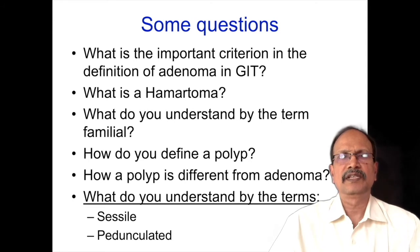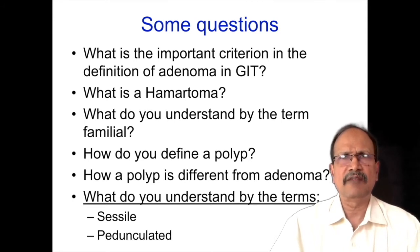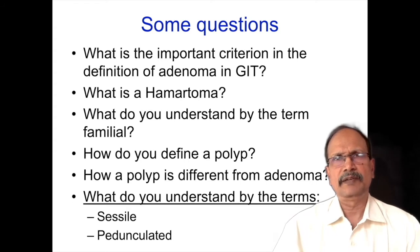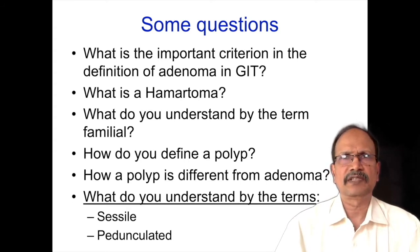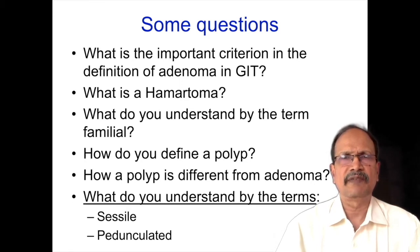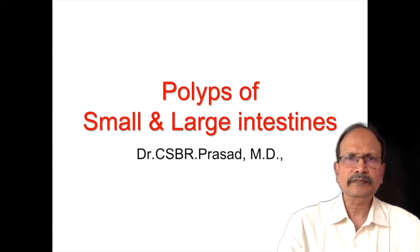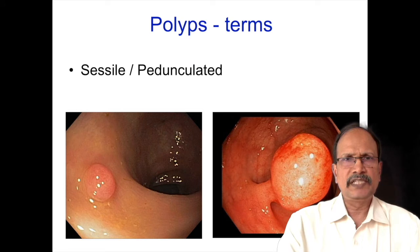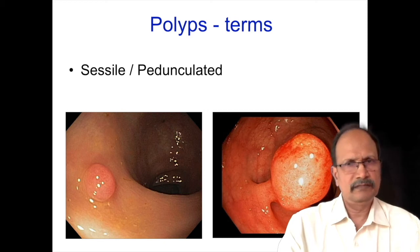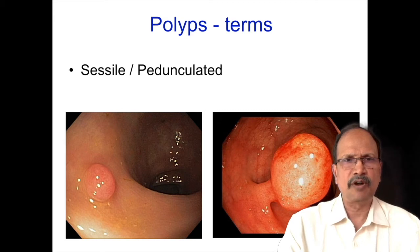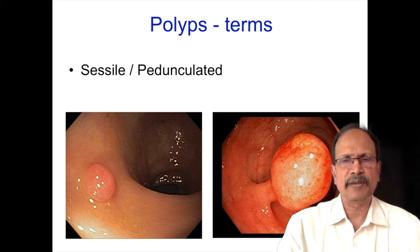What do you understand by the terms sessile and pedunculated? They are both polyps — they protrude from the surface. Sessile means having a broad base, whereas pedunculated will have a stalk-like or finger-like base. You can see in this example: the protrusion on the left side has a broader base, so it is a sessile polyp, whereas on the right side the protrusion has a stalk resembling a lollipop, so it is a pedunculated variety of polyp.